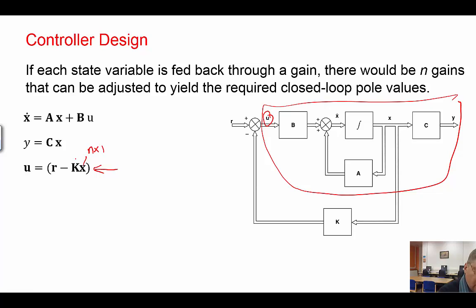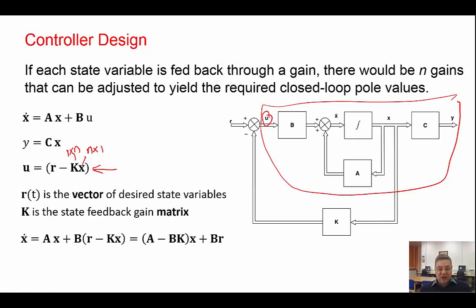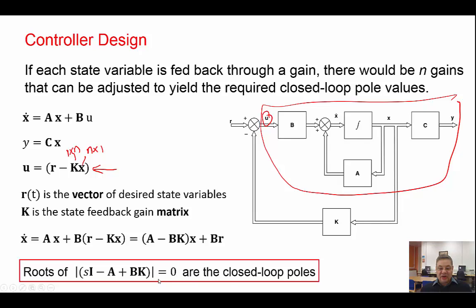X is n rows, one column, and K is arranged as 1 row and N columns. When you substitute U into the state equation, you get the new matrix. This gives us SI minus the new A, which has been modified to A minus BK. This gives us the location of the closed-loop poles.